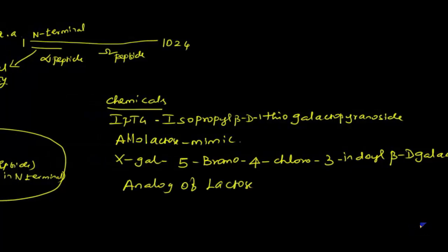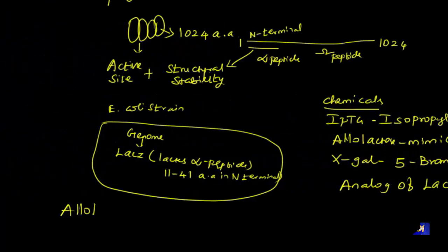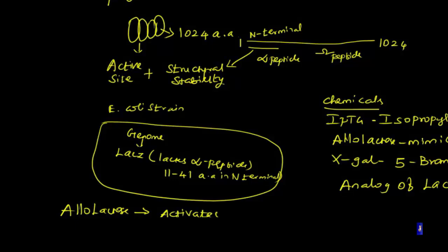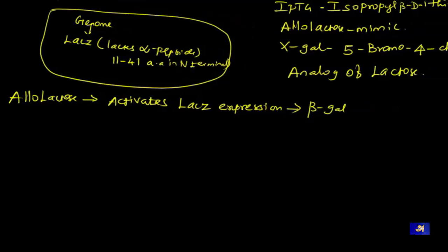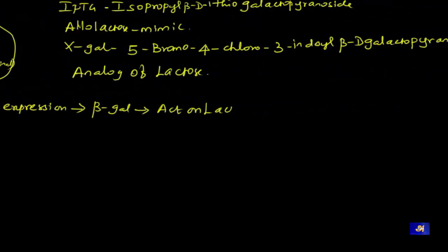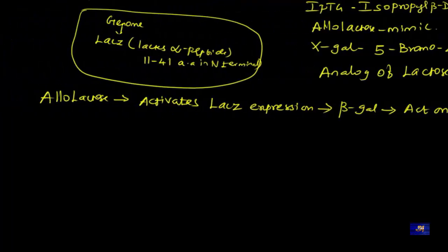Instead of giving lactose exactly, we're giving X-gal - that is the reason behind it. So this allolactose, IPTG, will activate the lac Z expression and produce beta-galactosidase. Whatever beta-galactosidase will do, we've seen - it will act on lactose, right? But here instead of lactose we have an analog of lactose called X-gal.